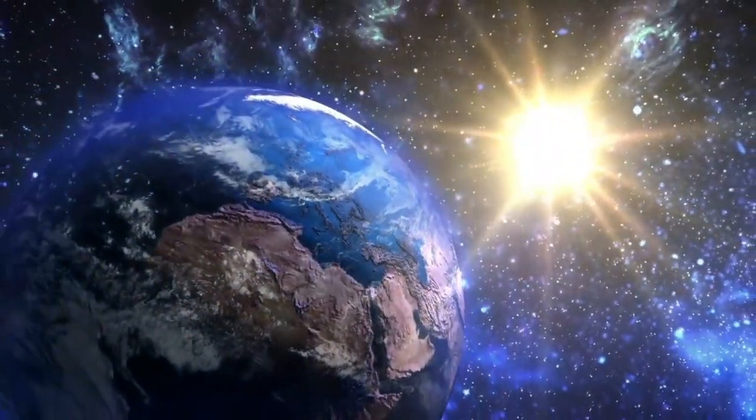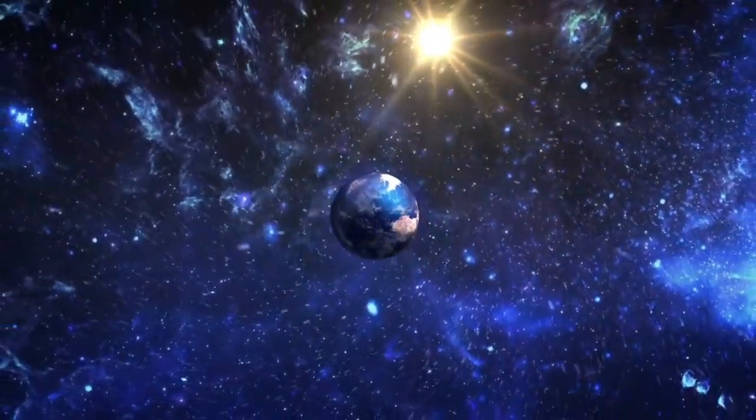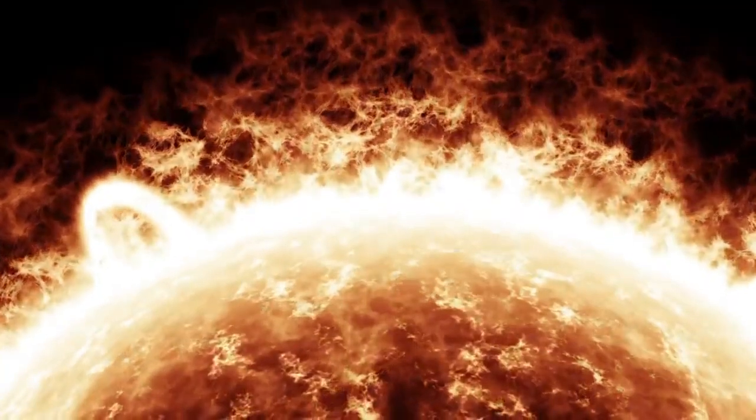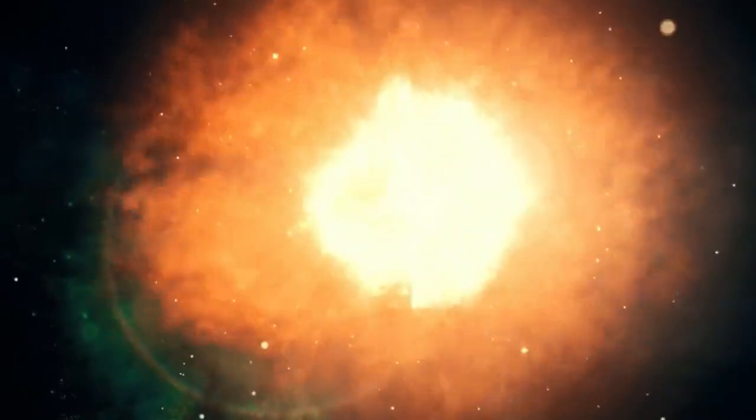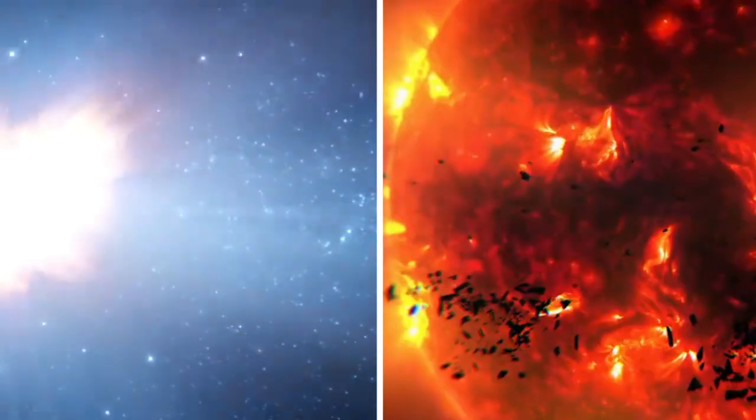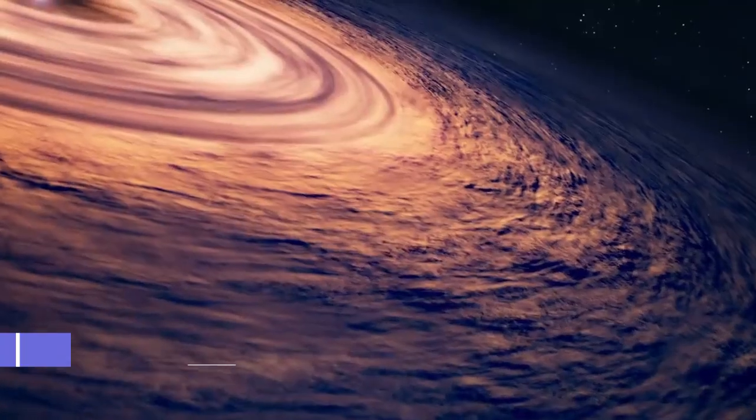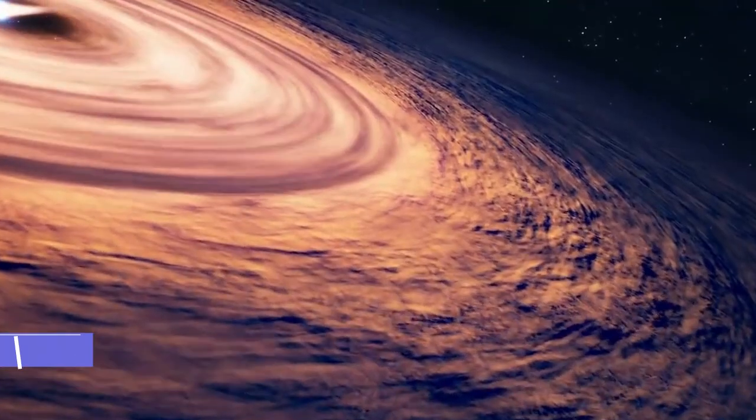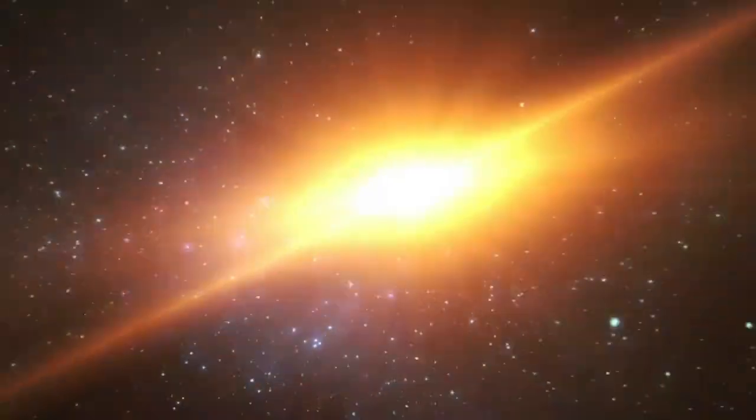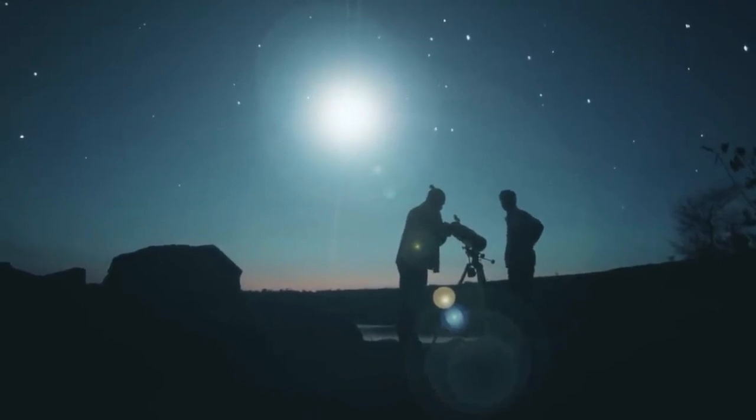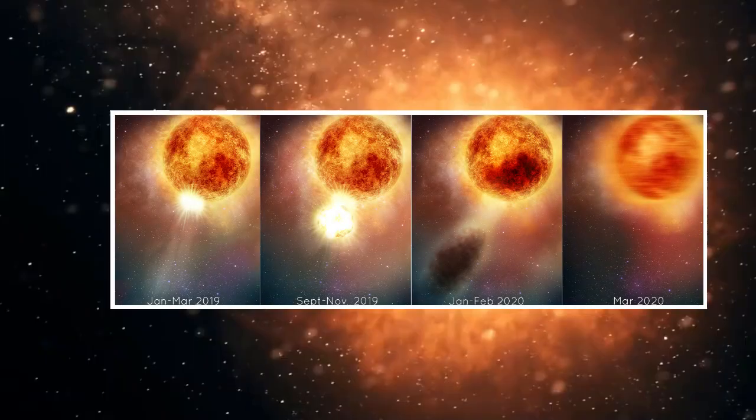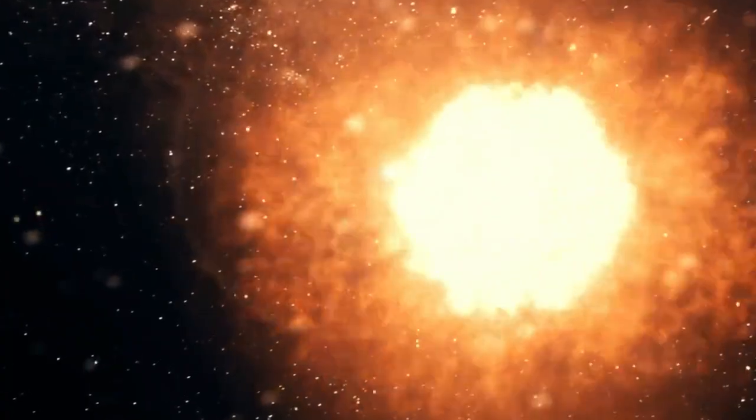They also noticed that the star's outer layer, called the photosphere, seemed to be expanding. It was as if Betelgeuse was getting bigger when observed from Earth. This expansion continued at a constant rate for most of the year until mid-November 2019, when it started to slow down. By this time, the material flowing out from Betelgeuse had stopped completely, and astronomers took new pictures of the star.